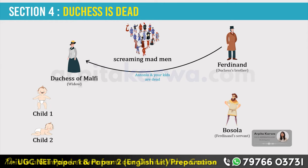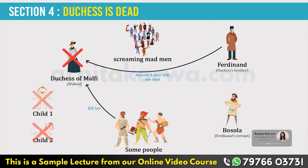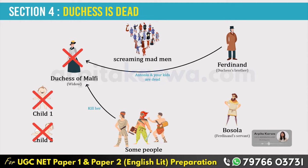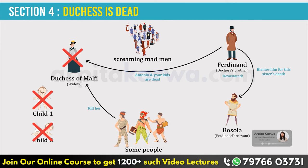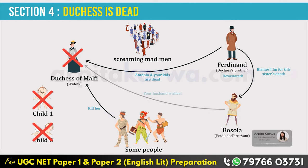Bosola realizes he has done wrong to the Duchess. He goes to the jail in disguise and tells her he is there to kill her. The Duchess is a brave woman and does not get scared at all. Some other men enter the jail and kill the Duchess, her children, and Cariola, the Duchess's maid. When Ferdinand sees the dead body of his sister, he goes on a guilt trip and blames Bosola for following his orders. Ferdinand refuses to pay Bosola for his service and leaves. In a short twist, the Duchess still has some breath left — Bosola tells her that Antonio is alive, and she is able to die peacefully.